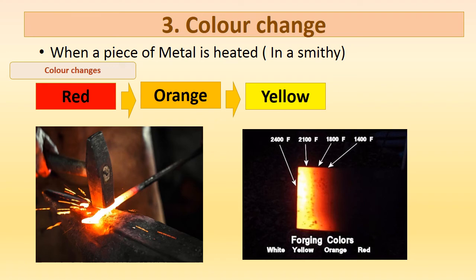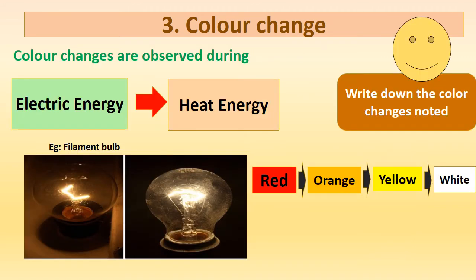The fourth effect of heat is color change. When a piece of metal is heated in a smithy, it first turns red, then orange, then yellow as it is further heated. Color changes can also be observed when electrical energy is provided to a filament bulb — the electrical energy converts to heat energy, and the filament changes color from red to orange to yellow, and finally to white.